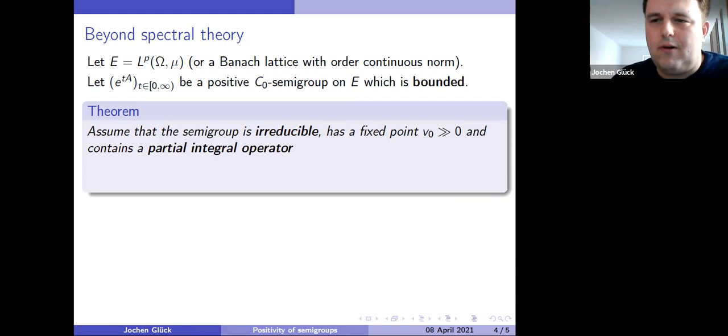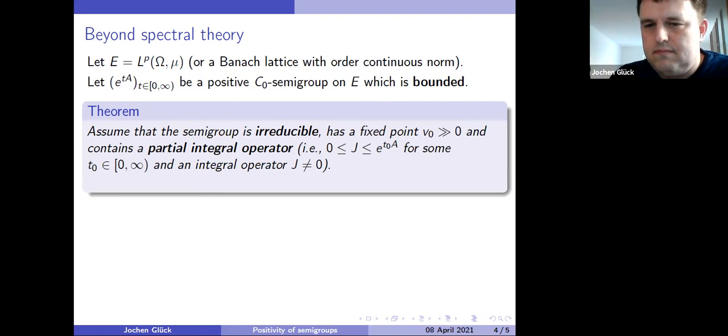And now the interesting point, and I think if you listened maybe to the talk this week, I might have also mentioned this, partial integral operators are interesting. So we assume that the semi-group contains a partial integral operator, which means only the following thing: there is a time t naught, and there is an integral operator G and J, which is not zero, J is not zero, such that J is sandwiched between zero and the semi-group operator at time t naught. That's partial. This means that e to the t naught A is a partial integral operator because there's an integral part below it, which is not zero. If you wonder what is an integral operator, it simply means J can be represented by an integral kernel. You can write down the action of J as an integral kernel.